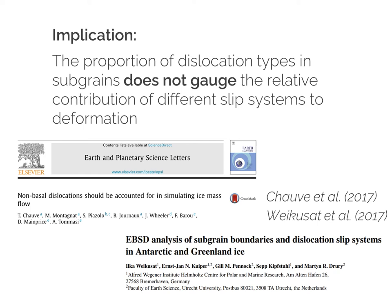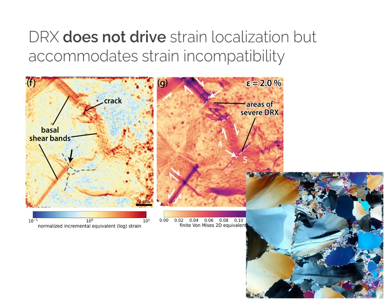The implication of this unimpeded dislocation glide of selected slip systems is that the proportion of dislocation types within subgrains does not measure the relative contribution of different slip systems to deformation. This finding allowed us to solve a recent paradox in the ice community — the observation of a high occurrence, up to 40%, of non-basal dislocations in subgrains of naturally and experimentally deformed ice. According to this, the paradox is a simple and apparent one. Lastly, under the experimental conditions tested, dynamic recrystallization did not favor strain localization as is commonly assumed in geoscience, but rather accommodated strain compatibility. Thanks for watching.